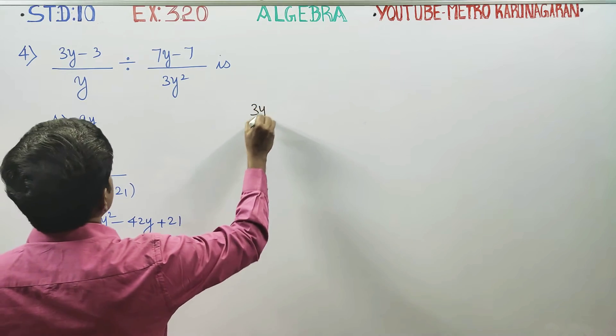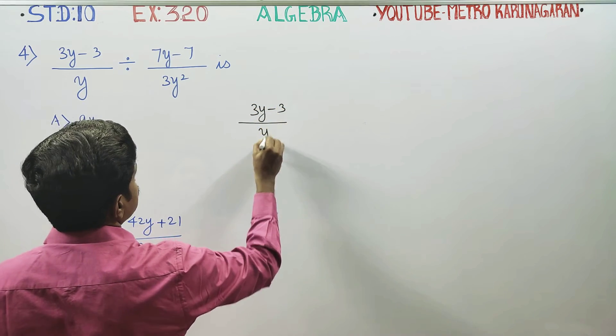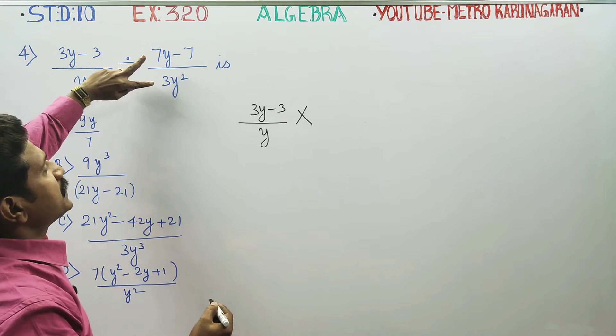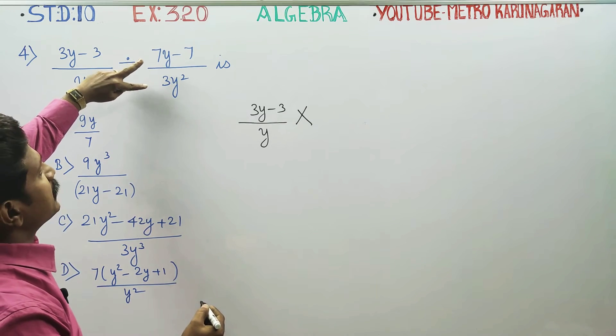First of all, I will start with my first expression. Division can be changed to multiplication. In the rational expression, it will be reciprocal.